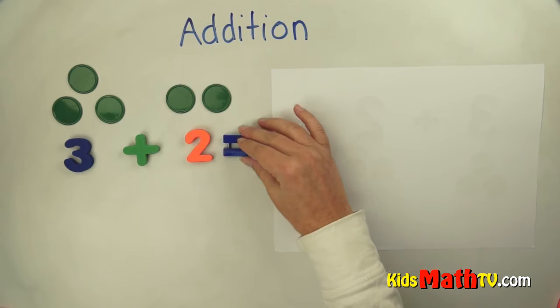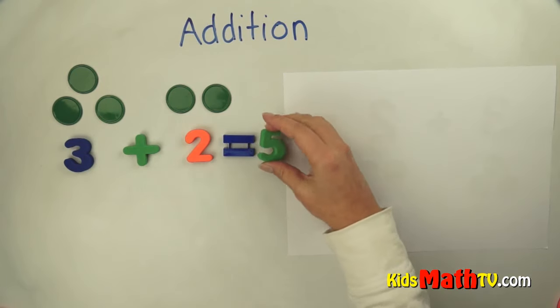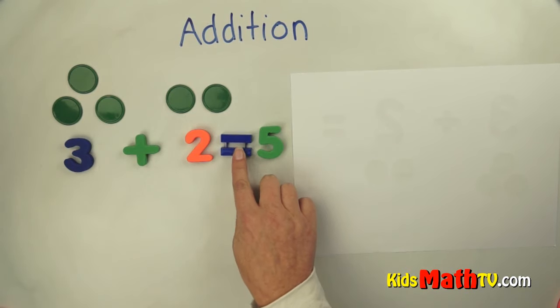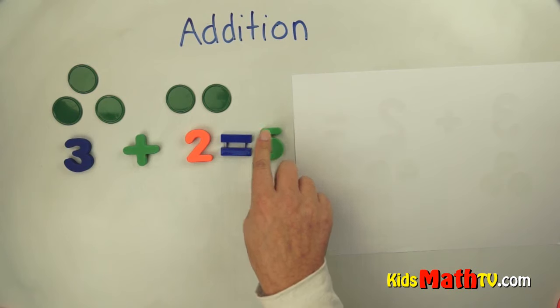There's the equals. That means how many there are. Five. Three plus two equals, or is, five altogether.